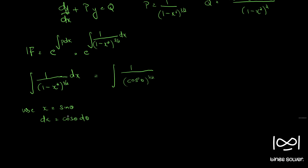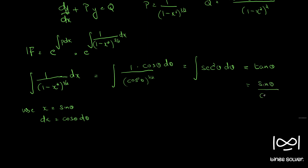dx becomes cos θ dθ, so we get ∫cos θ dθ / cos³θ, which simplifies — the cos terms cancel — and it becomes ∫sec²θ dθ. The integral of sec²θ is tan θ.